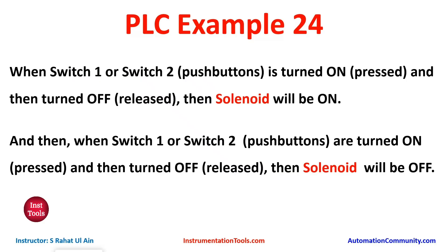Let's look at the example first. Example 24: When switch 1 or switch 2 is turned on and then turned off, the solenoid will be on. And then when switch 1 or switch 2 is turned on and then turned off again, the solenoid will be off. So in this case, we are using two push buttons.